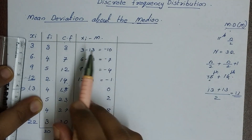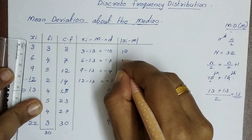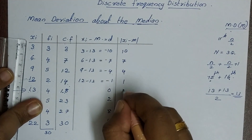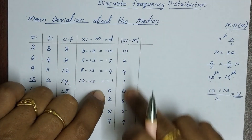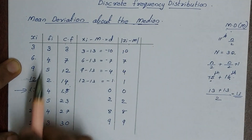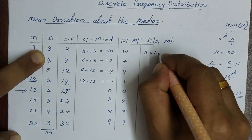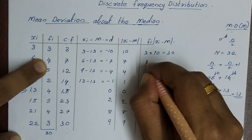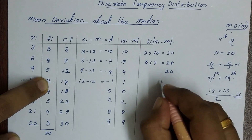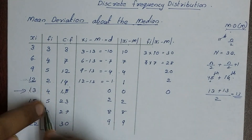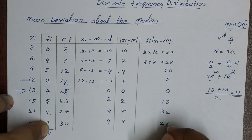So we need the deviation D. In the next step, we take the absolute value: |−10| = 10, |−7| = 7, |−4| = 4, |−1| = 1, then 0, 2, 8, 9. Now we multiply each absolute deviation by its frequency fi: 3×10=30, 4×7=28, 5×4=20, 2×1=2, 4×0=0, 5×2=10, 4×8=32, 3×9=27.